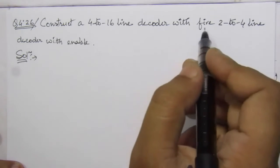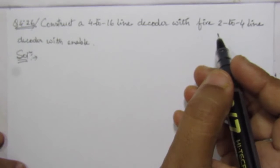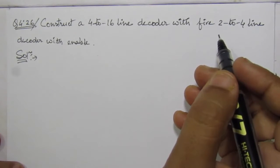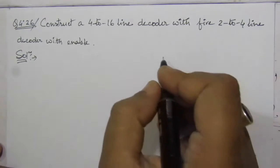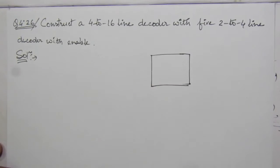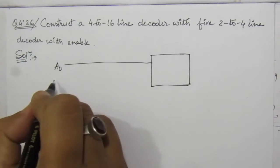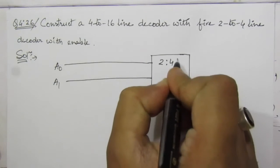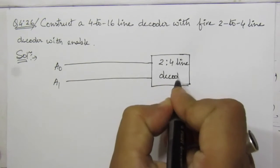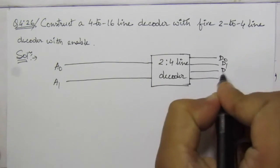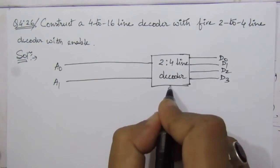So let us draw this design. Out of these five 2-to-4 line decoders, we will use 1 decoder to control the operation of the other 4 decoders. So let us draw the first 4 decoders. We have 4 input lines: A3, A2, A1, and A0. Suppose this is A0 and A1 going into a 2-to-4 line decoder. It will have 4 output lines: D0, D1, D2, D3, and it will have an enable line.